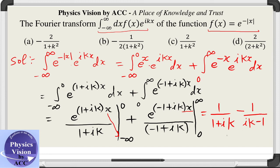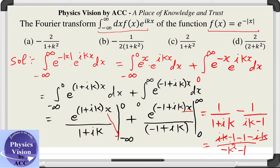Taking the LCM using the (a + b)(a minus b) = a² minus b² identity, we get iota² k² minus 1 in the denominator, which equals minus k² minus 1. In the numerator we have (iota k minus 1) minus (1 minus iota k). The iota k terms cancel, leaving minus 2. Dividing minus 2 by minus (k² + 1), one negative sign cancels, giving 2 divided by (1 + k²). So option C is the correct answer: 2 / (1 + k²).